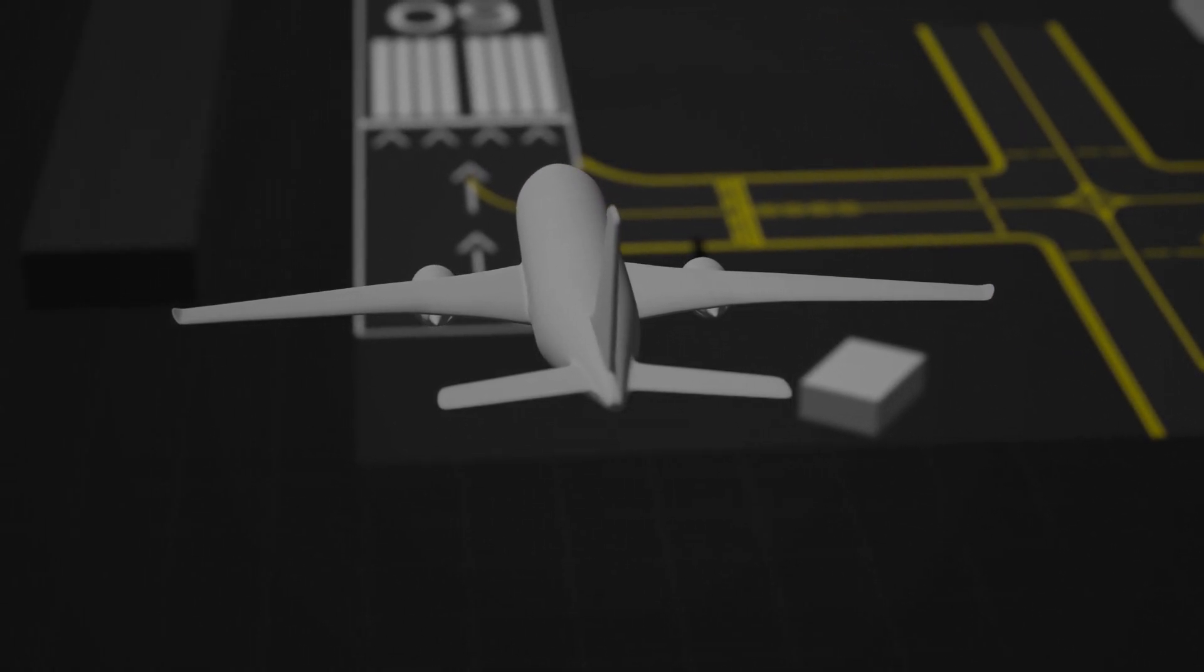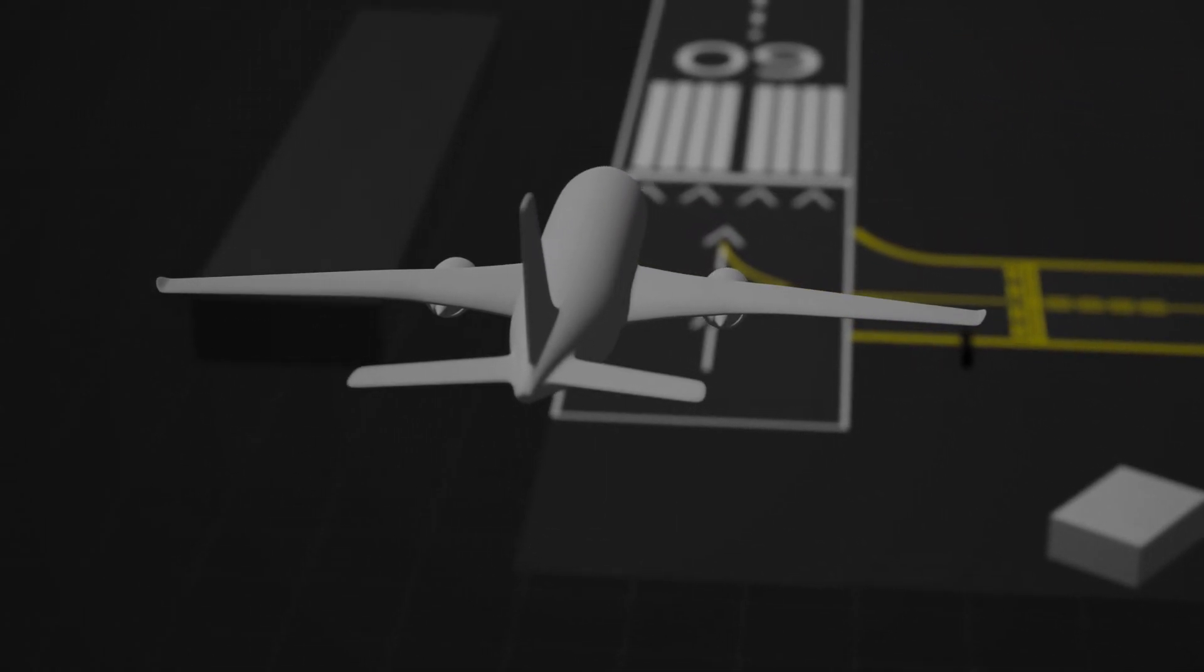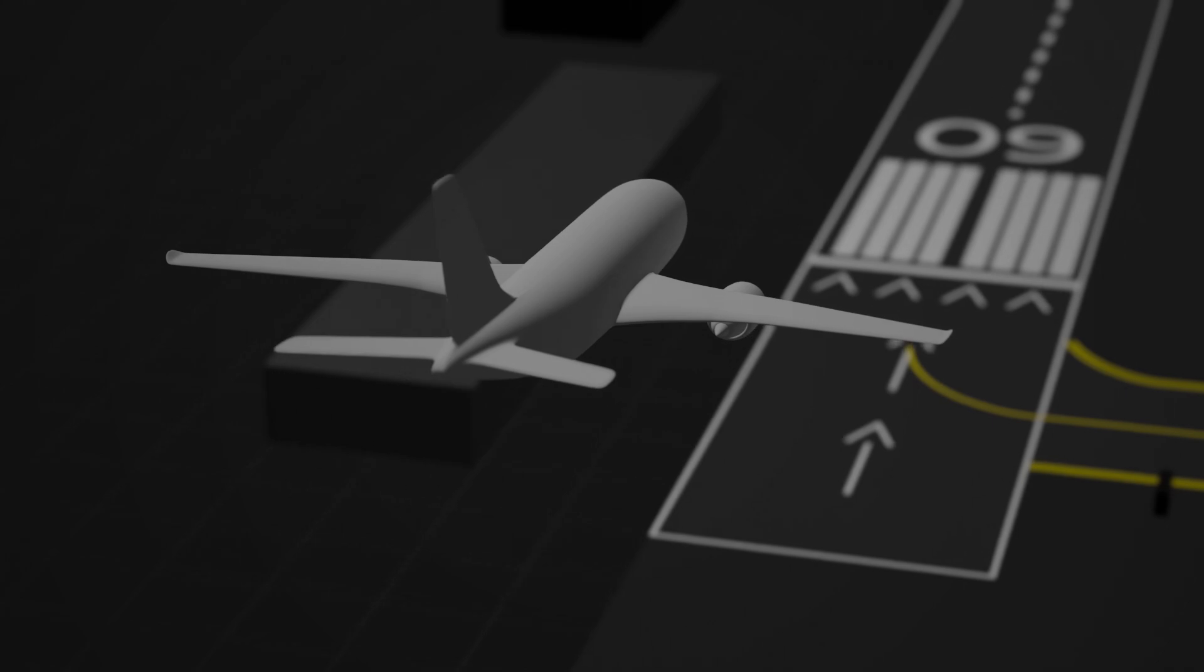Today we're diving into one of the most important systems in aviation, the Instrument Landing System, or ILS. But what exactly is it and how does it help pilots land safely in poor visibility?